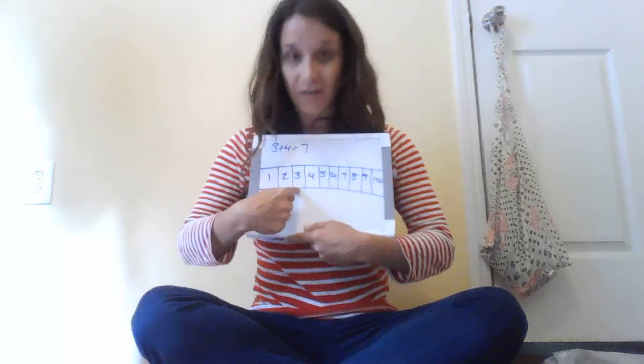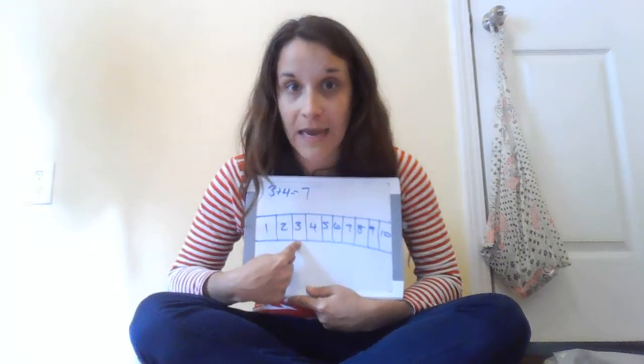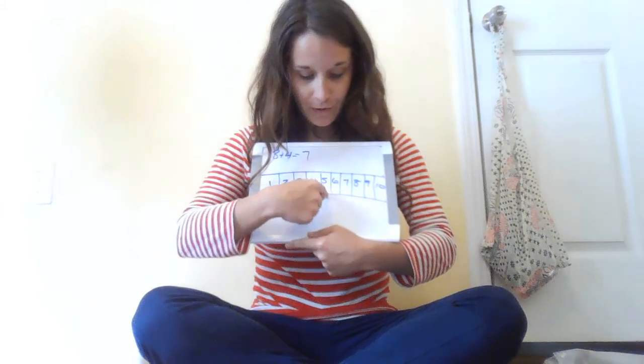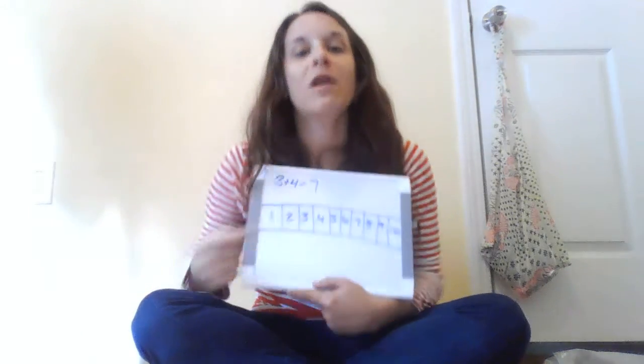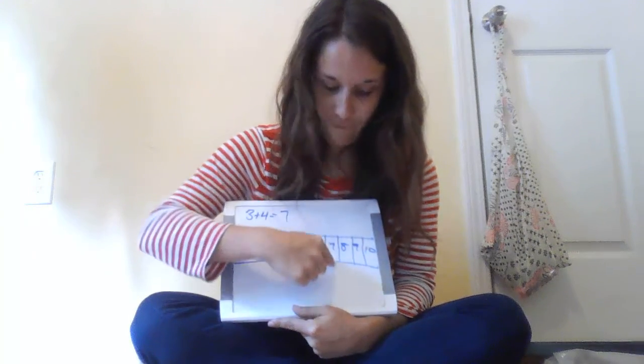I'm adding 4 more, so that means I need to start at this 3 and swoop my finger 4 times. Count with me: 1, 2, 3, 4. When I'm swooping, I start at my 3 but I don't say 1 until I swoop. Count with me: 1, 2, 3, 4. I landed on the number 7.